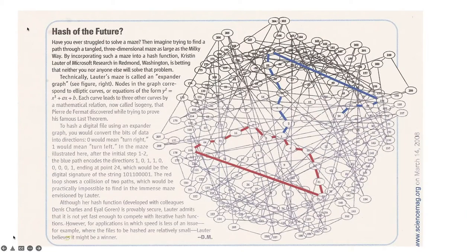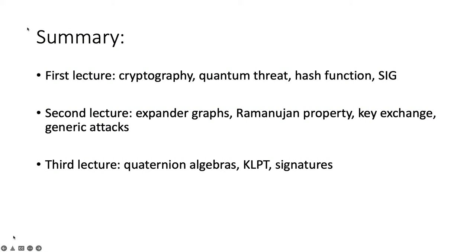As a reminder, in the first two lectures yesterday I introduced supersingular isogeny graphs and cryptography. I showed a picture from Science Magazine from 2008 — a very small supersingular isogeny graph — to give intuition of a very messy-looking graph that's hard to navigate. In the first lecture we covered cryptography, number theory, elliptic curves at a high level, the impending quantum threat, and we defined a hash function from supersingular isogeny graphs. In the second lecture we discussed these graphs from the perspective of expander graphs, the expansion property, the optimal expansion property of being a Ramanujan graph, and the key exchange application.